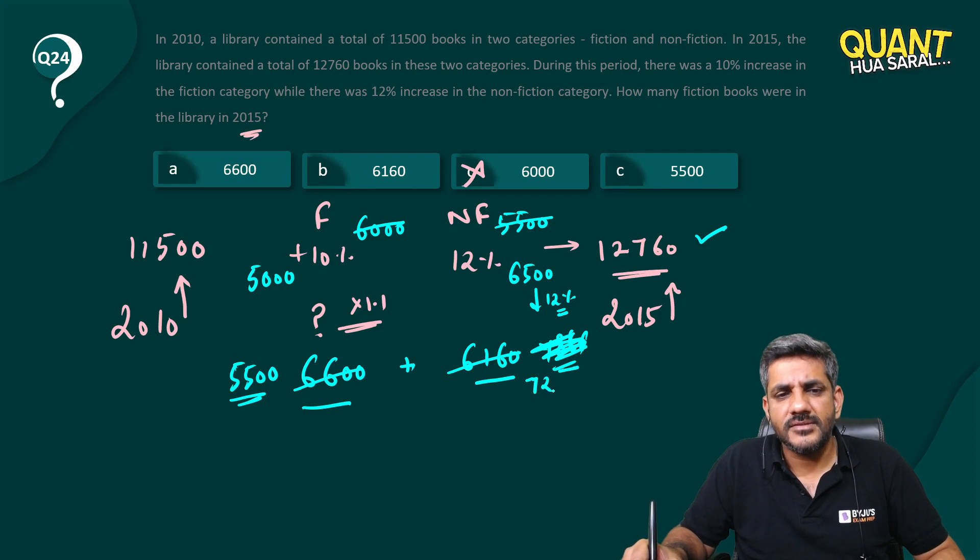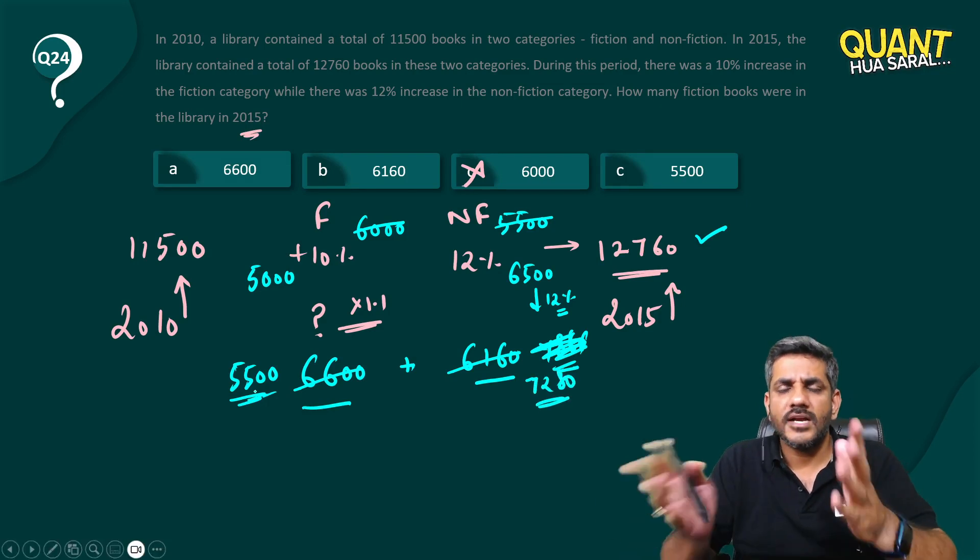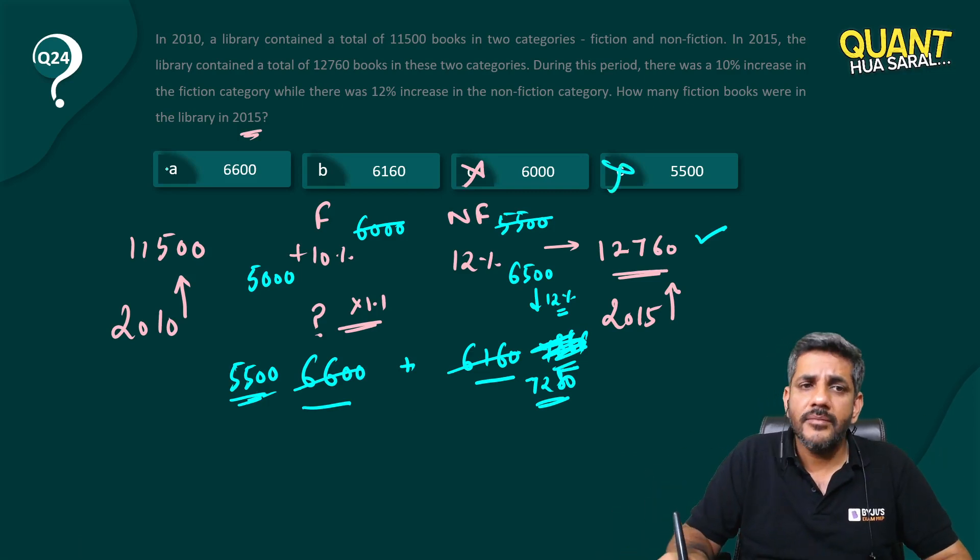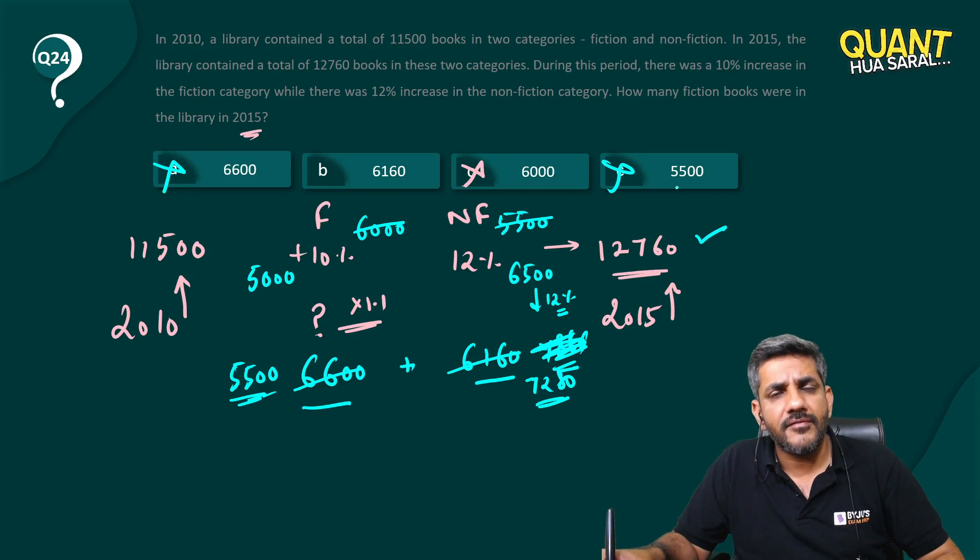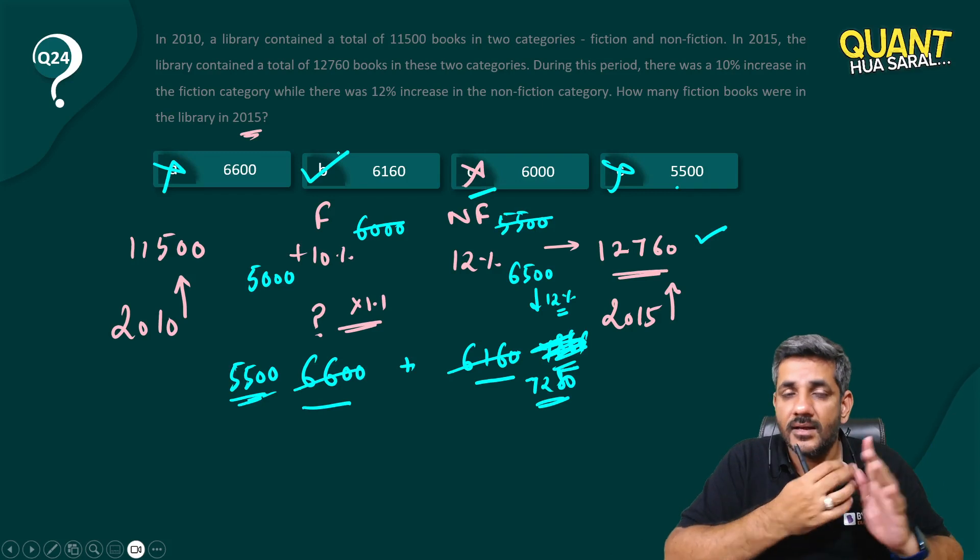So 788 means it would have become 7,280. Now 7,280 and 5,500, they do not add up to 12,760. So that I would have eliminated. I eliminated 6,600. I eliminated 5,500. This I had already eliminated. In any case, I would have got the answer then in that case, right?